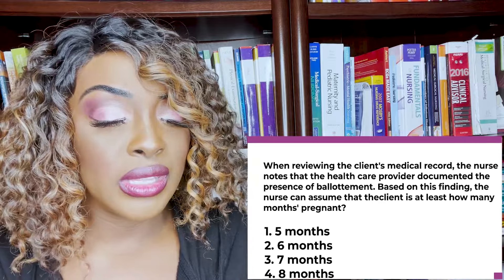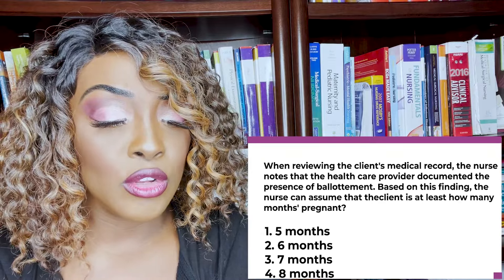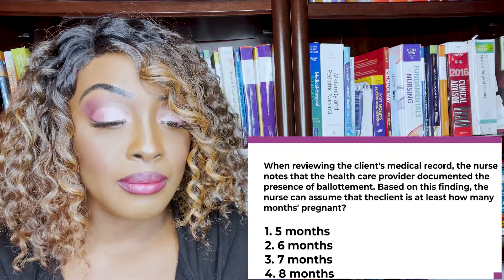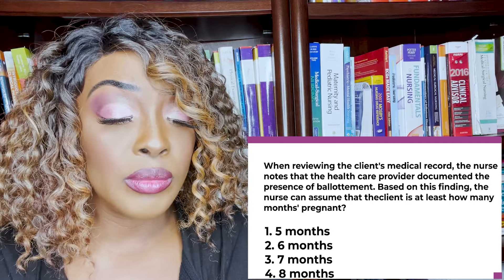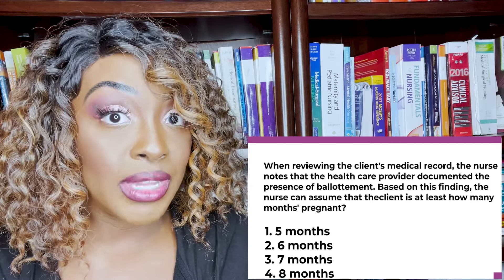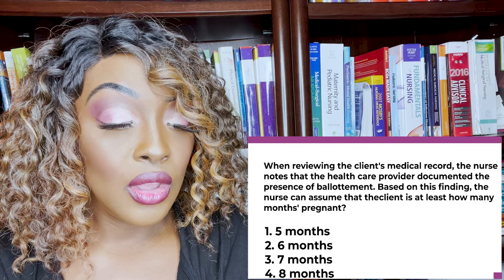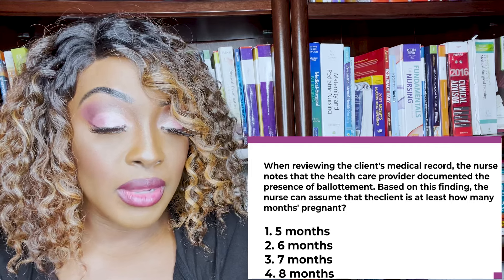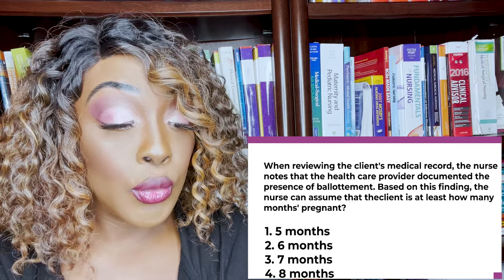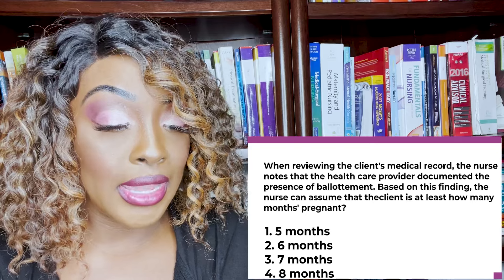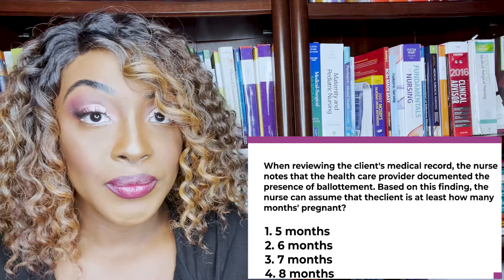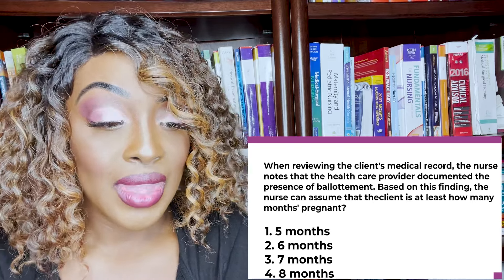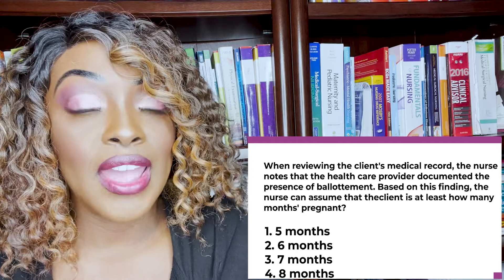When reviewing the client's medical record, the nurse knows that the healthcare provider documented the presence of ballottement. Based on this finding, the nurse can assume that the client is at least how many months pregnant? One: five months. Two: six months. Three: seven months. Or four: eight months. The correct answer is one — five months.